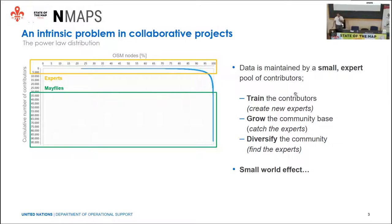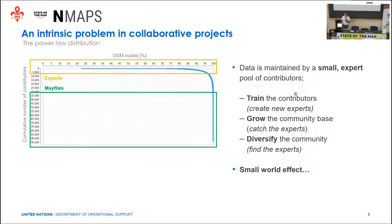Otherwise, you can grow the community base. If we know that 5% of users may become experts, we do bigger events and hope to catch someone, or diversify the community — expand to other countries or communities we don't know. There is a small world effect: with around 5,000 daily contributors in OSM and 500 here at State of the Map, there is a high probability it's always us meeting in different forms. It's very hard to find and bring in new people.